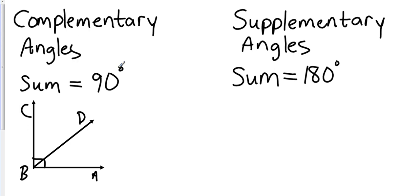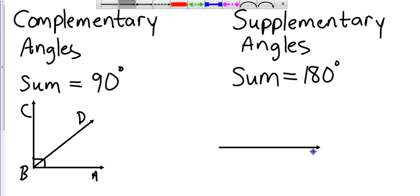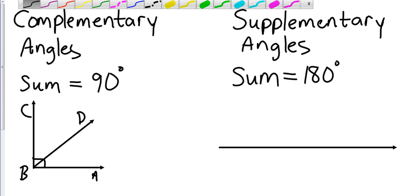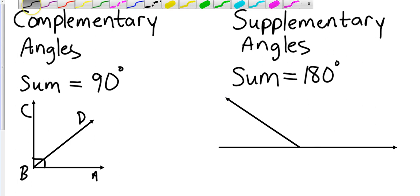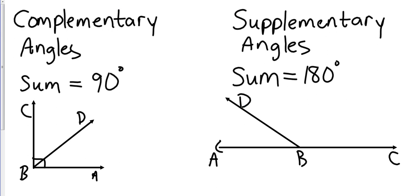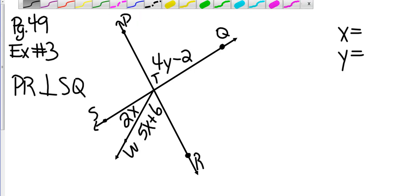Let's draw a line and label it with A, B, C, and D. Angle ABD and angle CBD are a linear pair, which makes them supplementary. Now I'm going to combine everything into one example — this is example number three on page 49. You can go ahead and hit pause right now to write it down, then come back in just a moment.